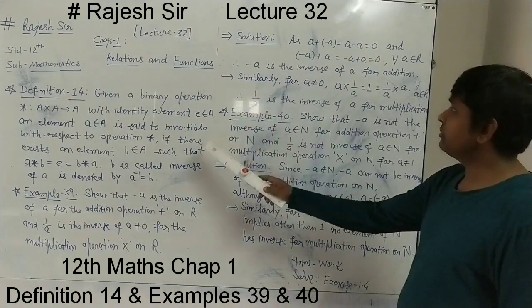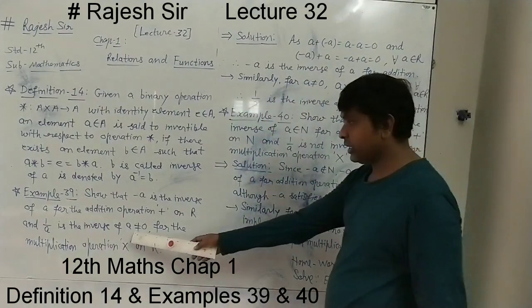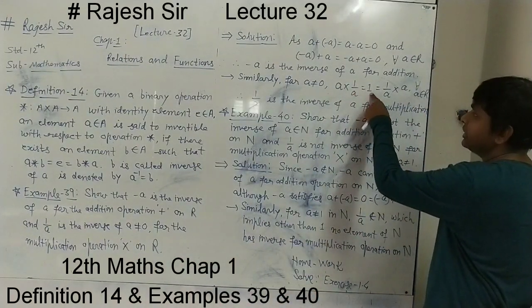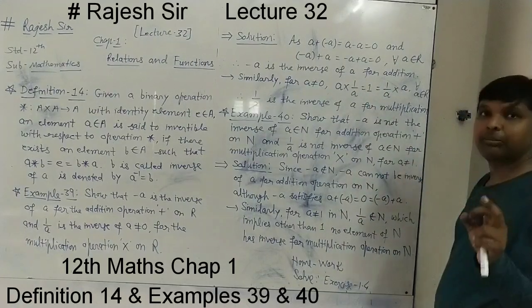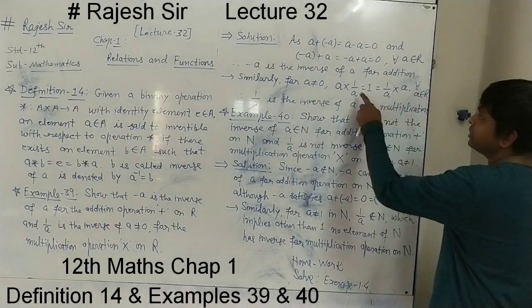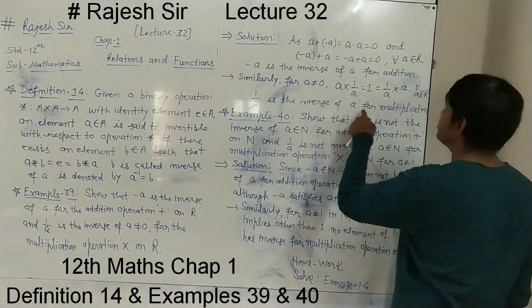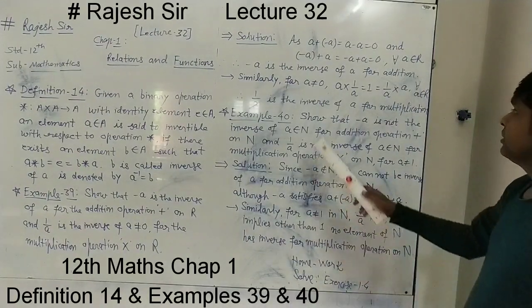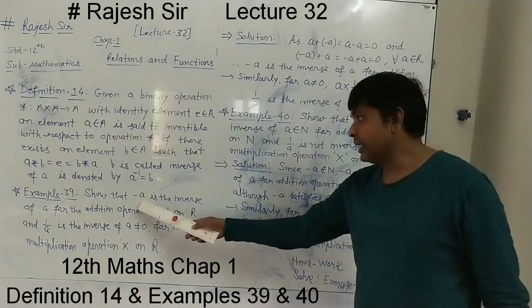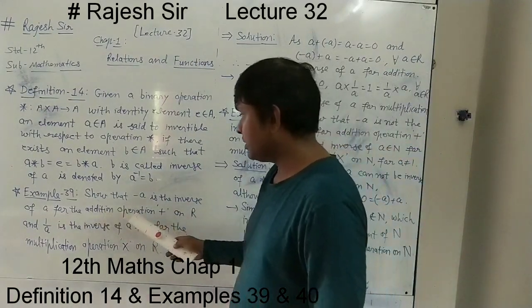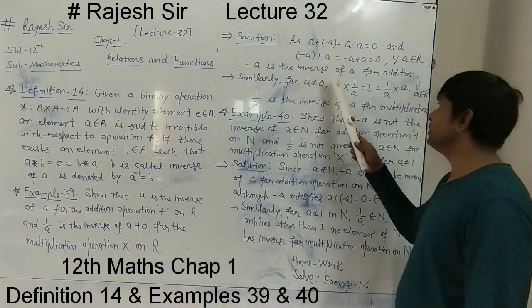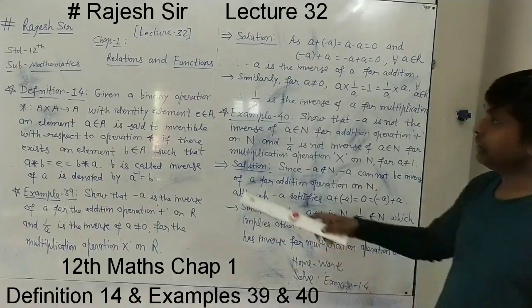Similarly for multiplication, for A not equal to 0: A into 1 upon A equals 1, and 1 is the identity element for multiplication. Also, 1 upon A into A equals 1 for every A belonging to ℝ. So 1 upon A is the inverse of A for multiplication. This way, minus A is the inverse of A in addition and 1 upon A is the inverse of A in multiplication — shown with the help of this definition.